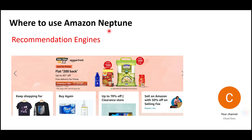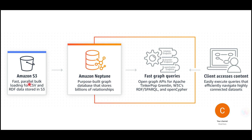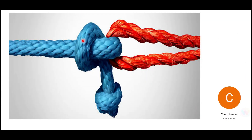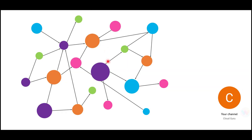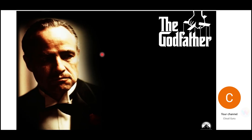That recommendation engine is based on Neptune. Neptune can be plugged in between — you can use S3 for your data feeds. Your data can come and reside in S3, and Neptune will hold that data in a graph format with billions of relationships. Always remember, it is all about relationships. This is what makes this database different. There are so many objects and entities linked with one another, and that is something which is difficult to store in an RDBMS and fire SQL queries against.